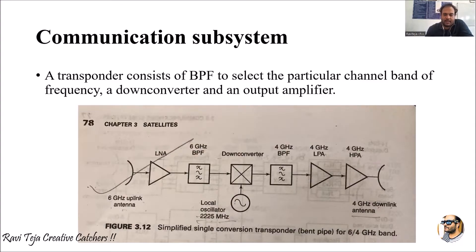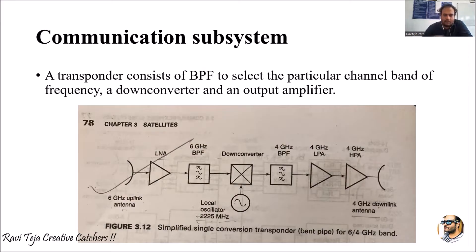This single conversion transponder can be considered as a bent pipe for the six by four gigahertz band. Six gigahertz is the uplink frequency and four gigahertz is the downlink frequency. This simplified single conversion transponder consists of an antenna at the first part which is at six gigahertz, used for the uplink.